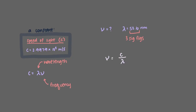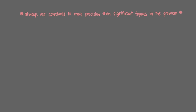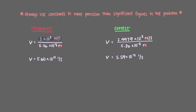Let's set our equation equal to frequency and plug in our given values. But be careful — the speed of light is in meters per second and the wavelength is in nanometers, so we have to make sure our units match. Our final result, when taking three significant figures into account, is 5.59 times 10 to the 15th inverse seconds. One word of caution: if we had used a rounded version of the constant, like 3 times 10 to the 8th meters per second, we would have gotten 5.60 times 10 to the 15th inverse seconds — an answer that is incorrect to three significant figures.